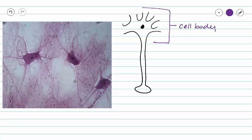This area here is considered to be the cell body of our neuron. And our cell body can go by different names. We can call it the cell body, or we could call it the soma, or we can call it the neurosoma. But regardless, our cell body or soma is going to contain our nucleus, which I just highlighted in purple.